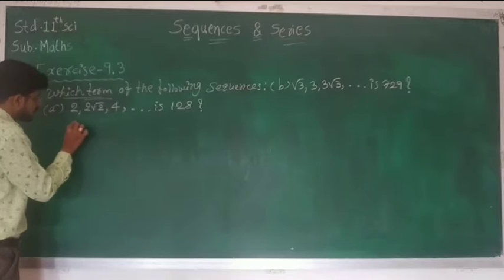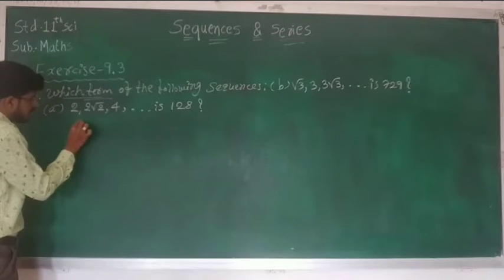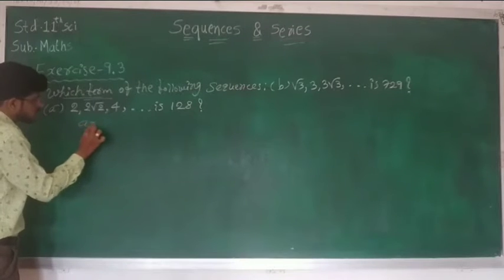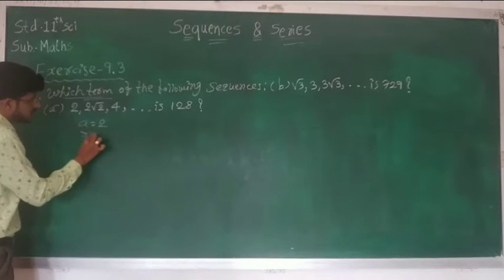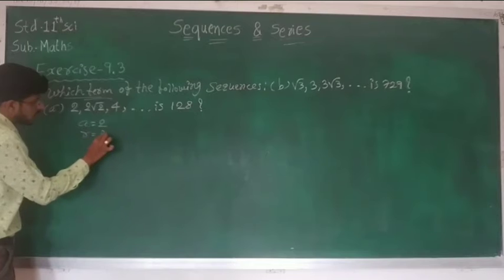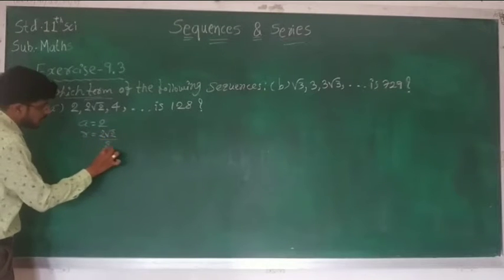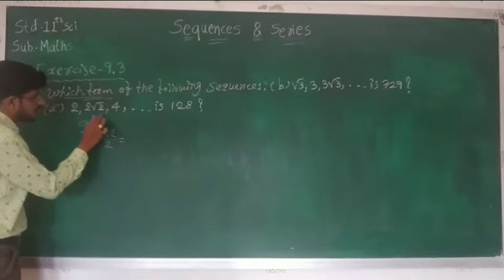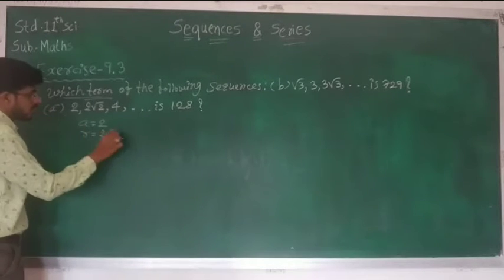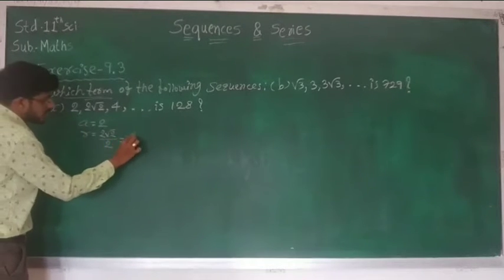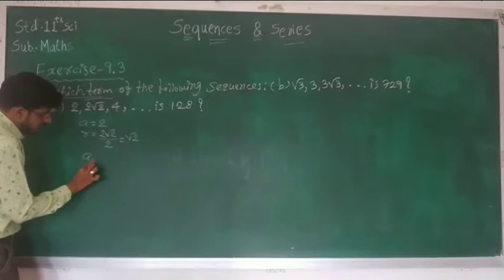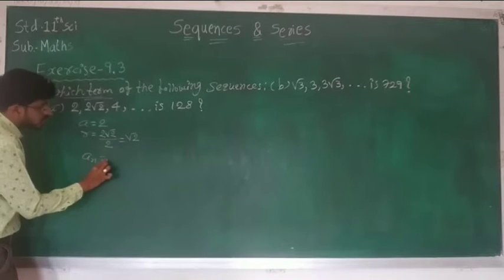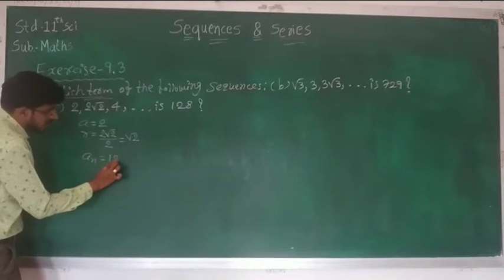From the given GP, the first term a is equal to 2. The common ratio r is equal to 2√2 upon 2, that is second term upon first term, so we get √2. Let us suppose that the nth term will be 128.